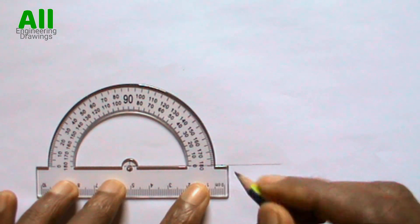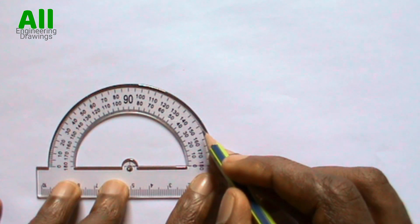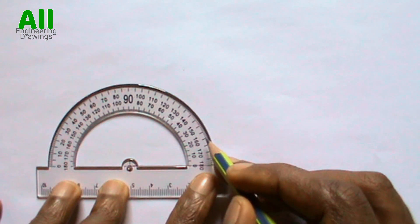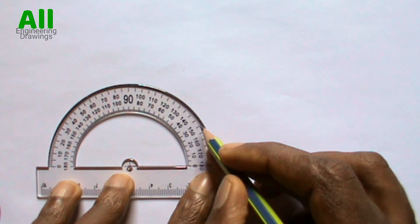Then you have to mark out the required angle. If you are required to draw an angle of 30 degrees, you have to mark point 30 degrees. If you are required to draw an angle of 50 degrees, you have to mark point 50 degrees.